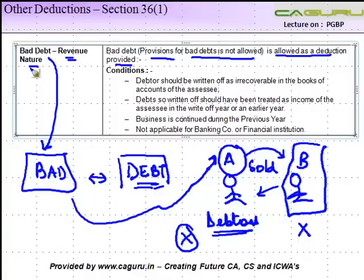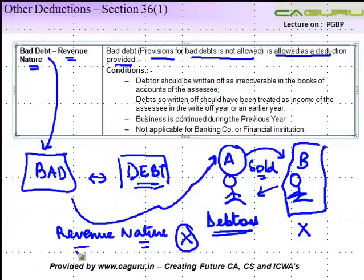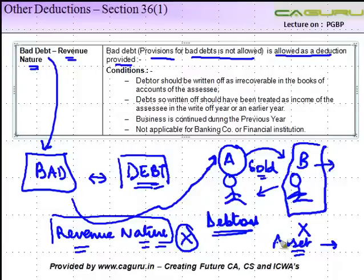What I mean by revenue nature here is that this was towards the sale of goods, so the income which A got out of this was of a revenue nature. It is not of a capital nature — for example, if A had some asset which he sold off to B and B refused to pay him, that is a capital transaction. That is not what we are considering here; we are considering only what is of a revenue nature.